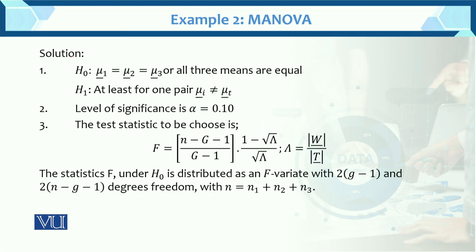Now here is the solution. We have 6 steps. The first step is to construct the hypothesis: H0 is mu1 = mu2 = mu3, i.e., all 3 mean vectors are equal. The alternative hypothesis is that at least one pair mu_i is not equal to mu_t, meaning all 3 mean vectors are not equal. The second step is the 10% level of significance, and the third step is the test statistic — Wilks' lambda.